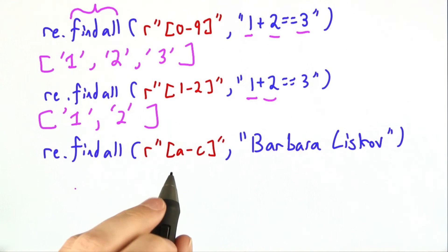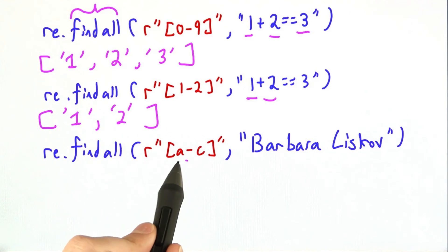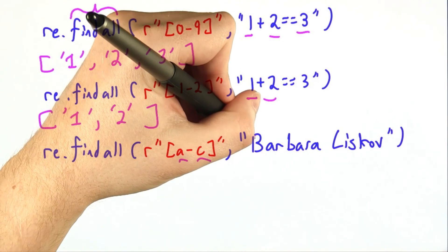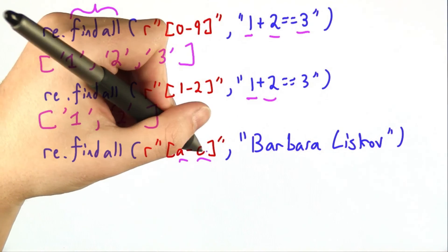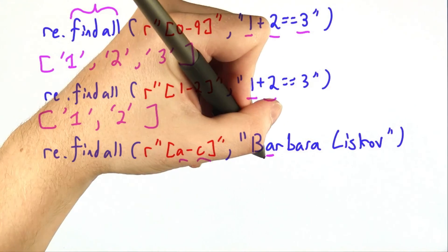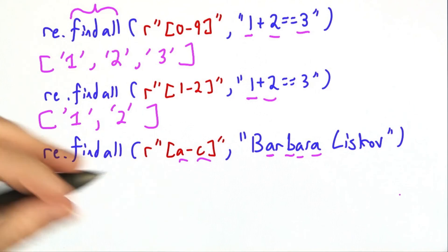This last example is a little more tricky. We're looking for the letters A through C, but if you look carefully, these are the lowercase letters A and C. So even though this B is very tempting, this capital B in Barbara, it's not between lowercase A and lowercase C. So we'll match this A, B, A, A, and then there's nothing over here in Liskov.